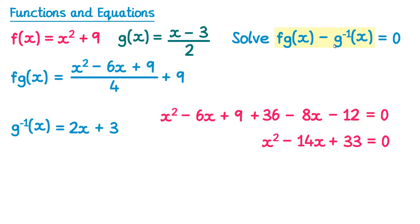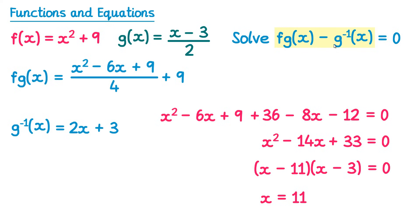We have a quadratic x² − 14x + 33 = 0 to solve. Looking for numbers that multiply to 33 and add to −14, we find −11 and −3, giving (x − 11)(x − 3) = 0. This gives two solutions: x = 11 and x = 3.